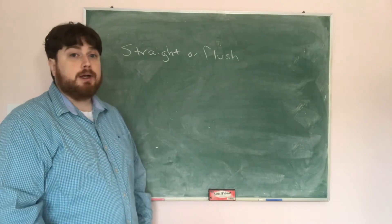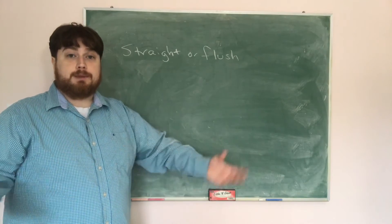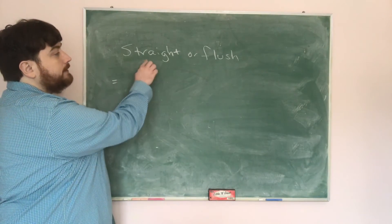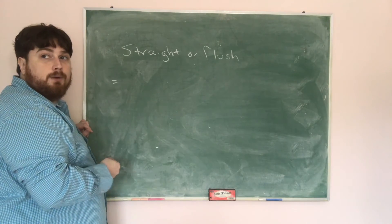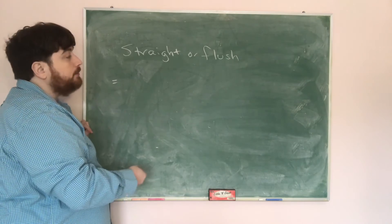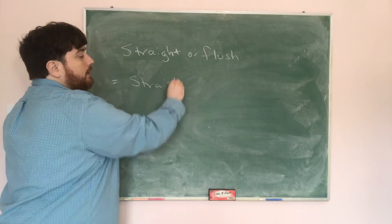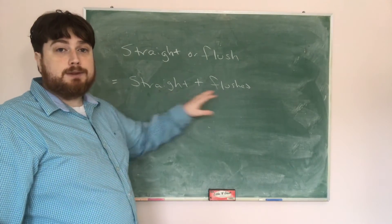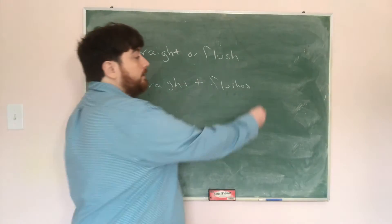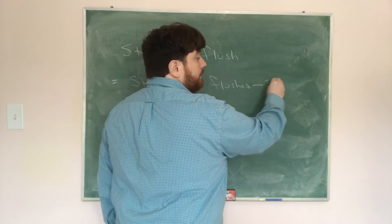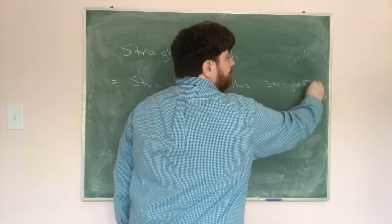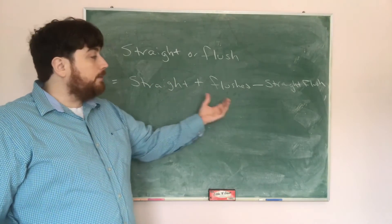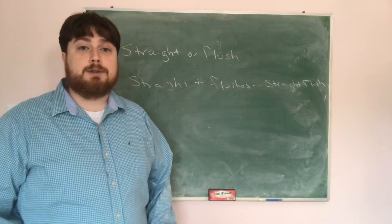Now we want to find how many hands are either a straight or a flush. We're counting the union of all straights and all flushes. Using the addition principle, that's the number of straights plus the number of flushes, minus those that are both — straight flushes — since those are double-counted. So we need to find the number of straight flushes.